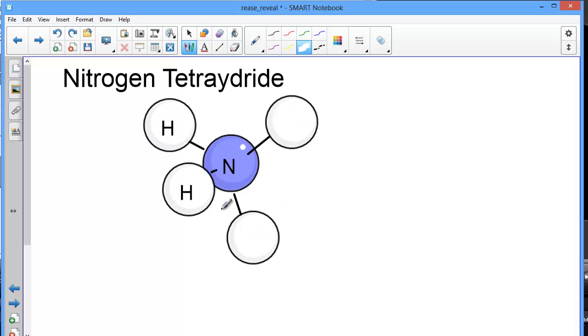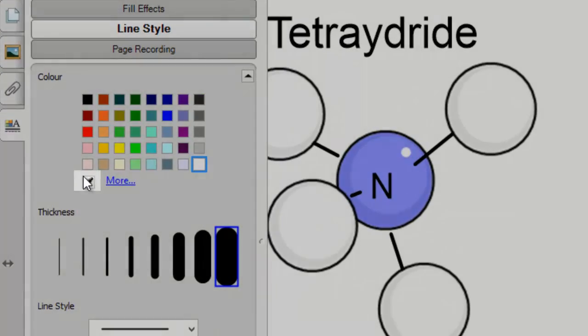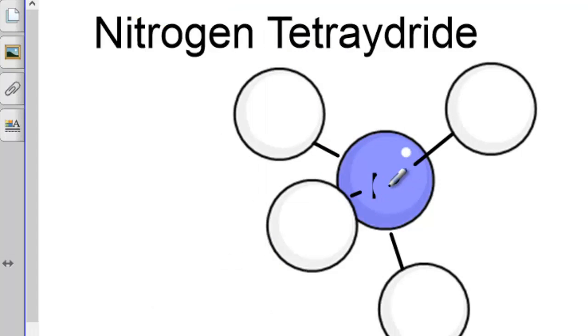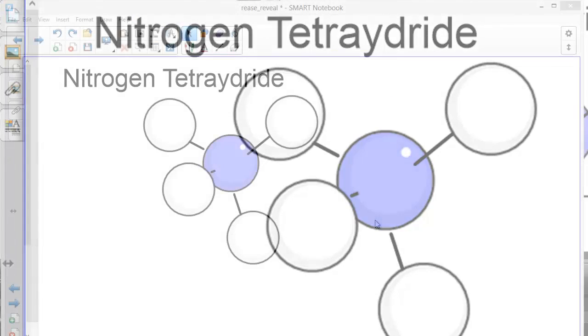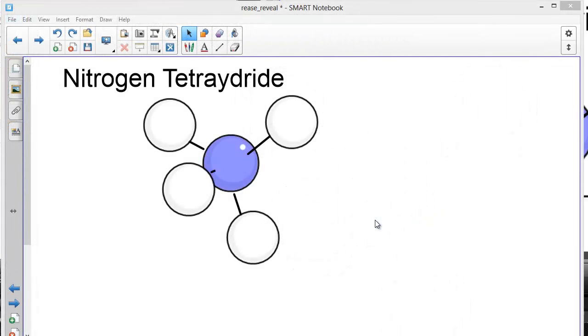And go over the H's like so. Now I need to color in the nitrogen with the same purple as the background, so we come across to the properties tab and I'll use the eyedropper that allows me to sample that background.